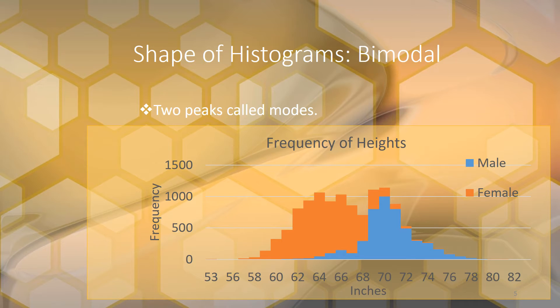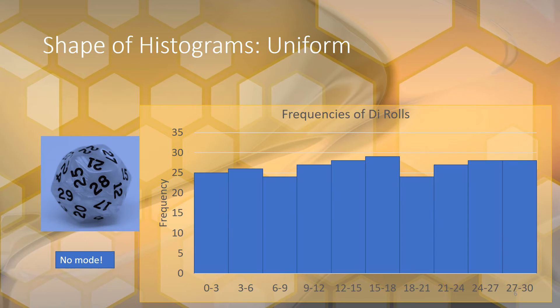When you're describing the shape, you also want to give an explanation of why the shape is how it is. This is a uniform distribution, which means there are no peaks.